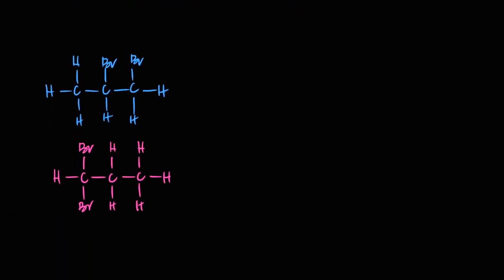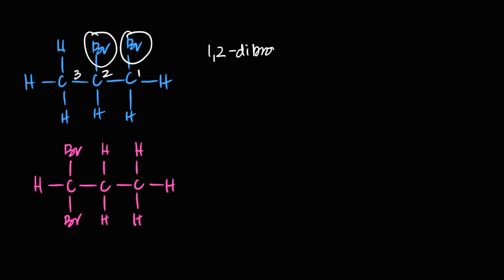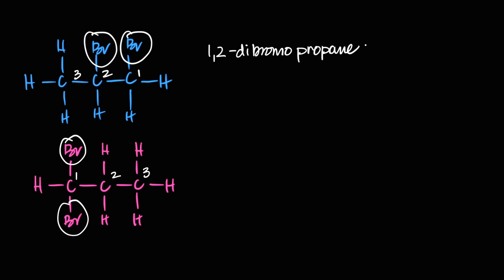Two more haloalkane examples: the first (blue) is a three-carbon chain with two bromine atoms. Counting from the right gives bromine on carbons one and two — so it's 1,2-dibromopropane. The second is also a three-carbon chain with two bromines, both on the same carbon — counted from the left to give the lowest number — making it 1,1-dibromopropane.